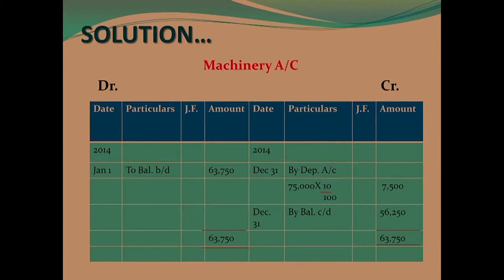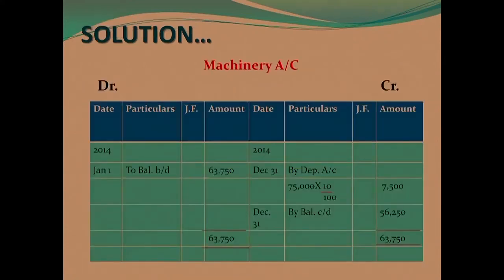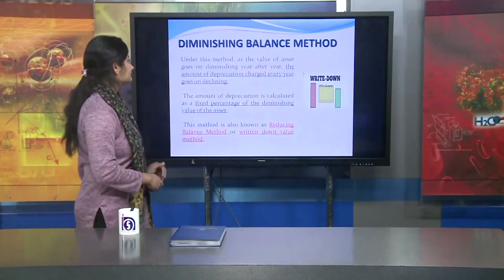Now we prepare the depreciation account. From the machinery account, for 2012 we had depreciation of 3,750 for six months from July 1st to December 31st. For 2013, the depreciation amount was 7,500, and similarly for 2014 it was also 7,500. These amounts are transferred to the P&L account each year. This completes our entry in the books of account for the SLM method.